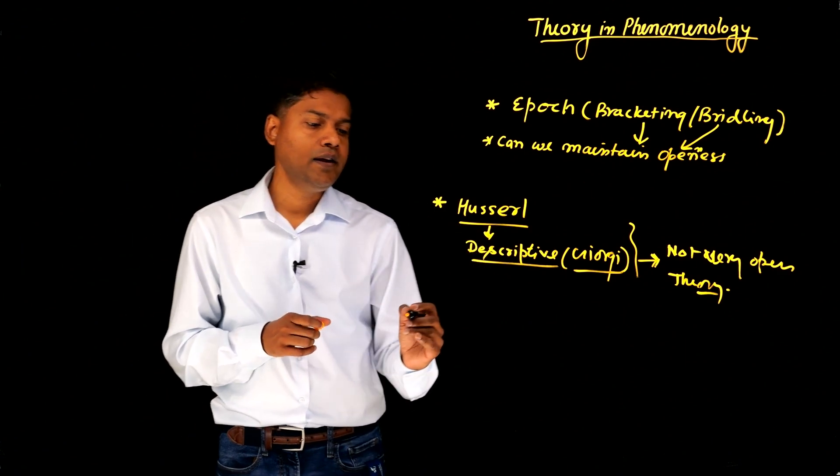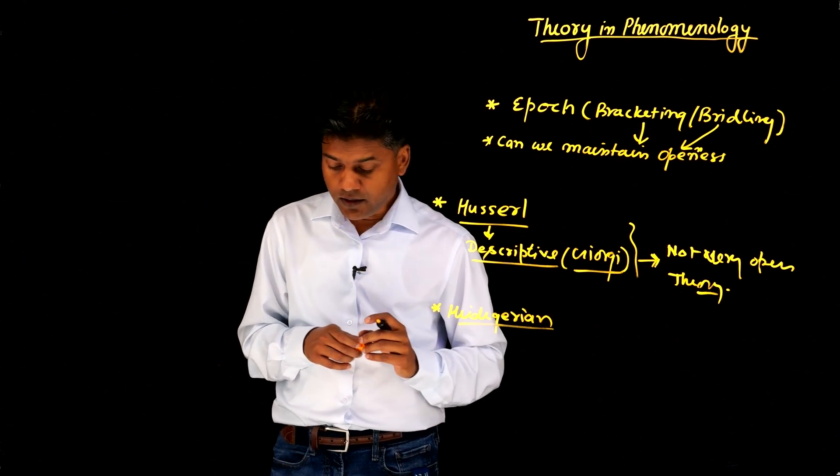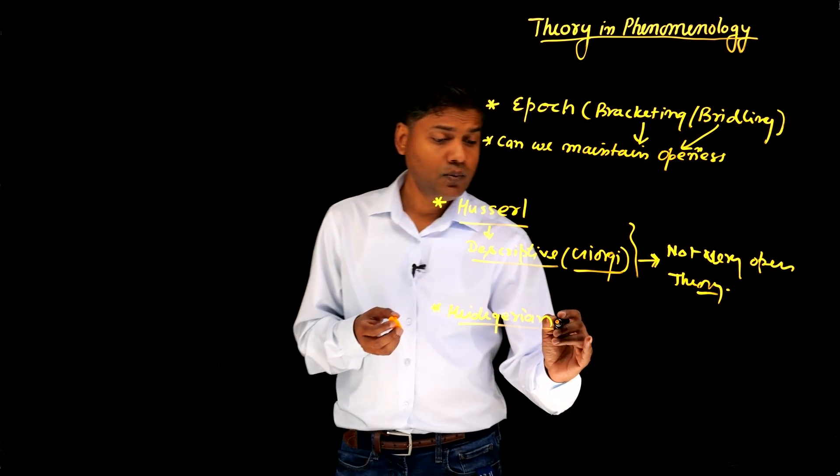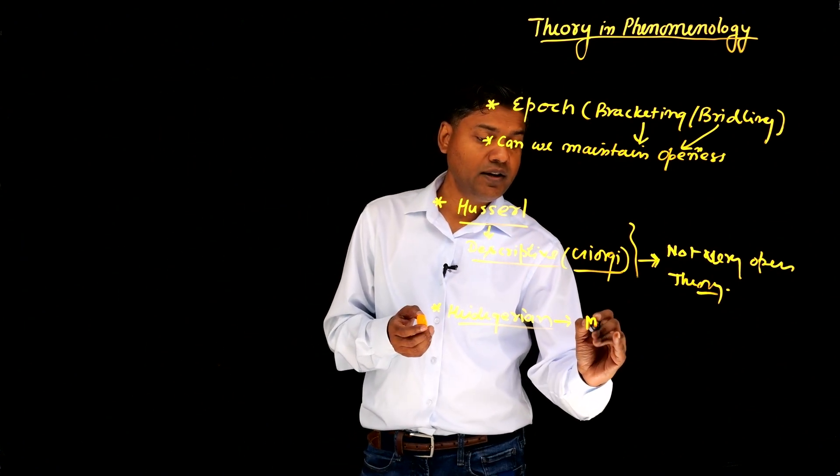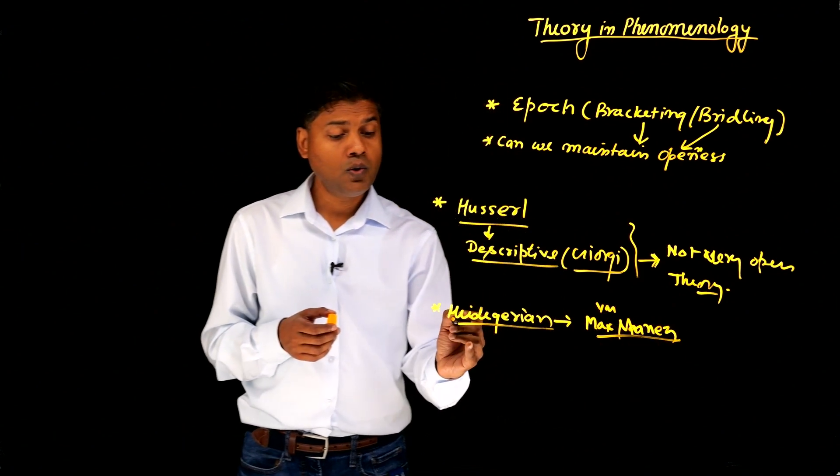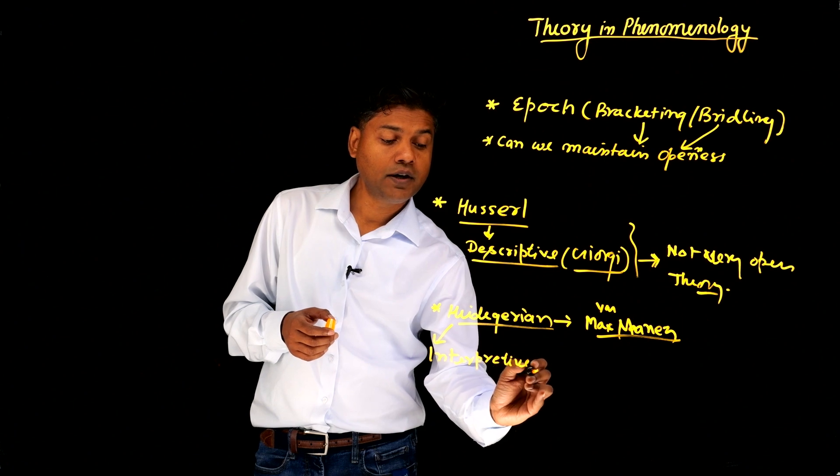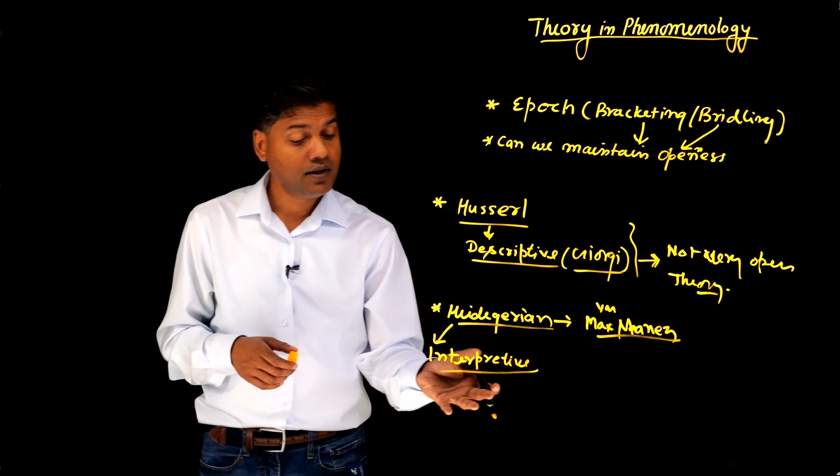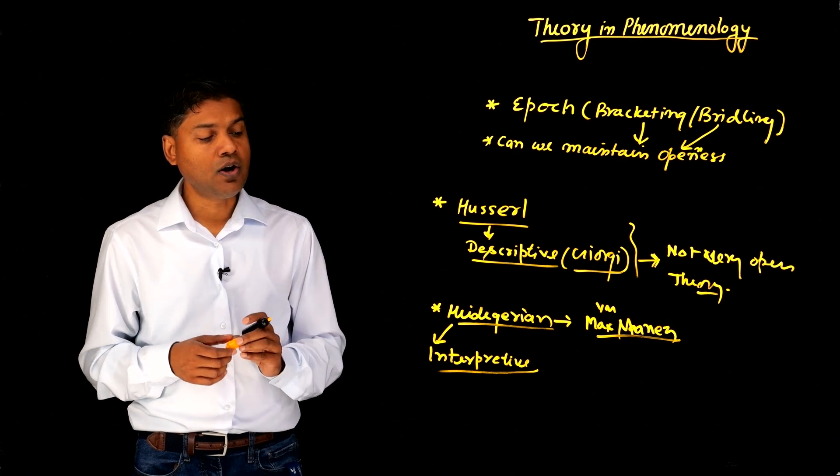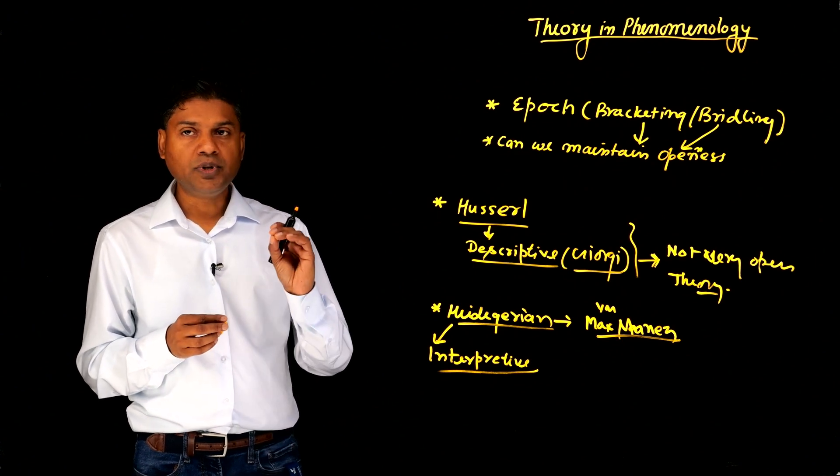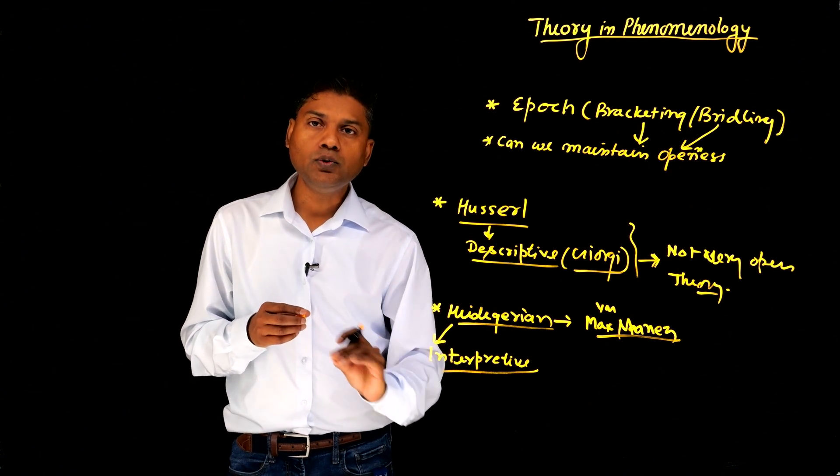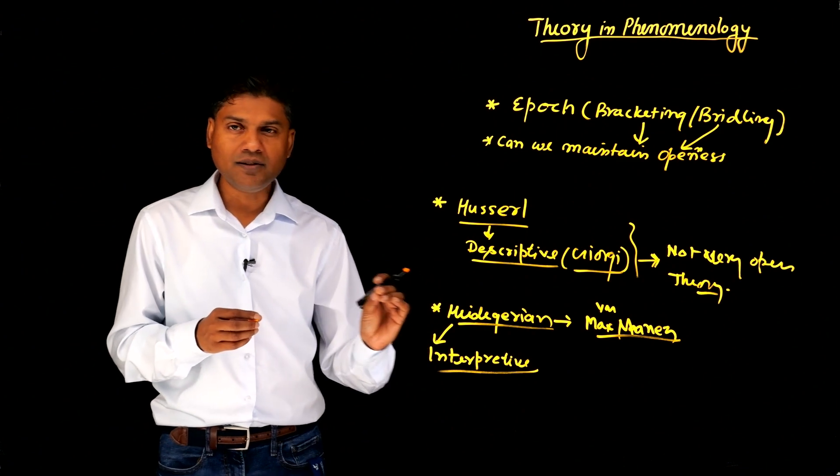Now let's talk about Heideggerian approaches. Heideggerian approaches, the phenomenologies which are inspired by Heidegger, and one which is highly used, Max van Manen. Van Manen's phenomenology, as you know, it's more interpretive, and we call it hermeneutic phenomenology as well. So in hermeneutic phenomenology, the focus is on interpretation. So you are collecting this data, and then there is a continuous process of interpretation.